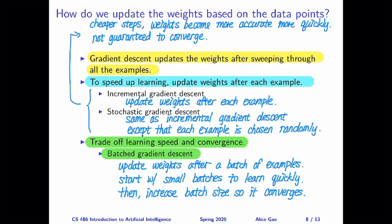That's everything for this video. After watching this video, you should be able to do the following. Explain the high level ideas of gradient descent and how we can apply it to learn the weights in the neural network. Explain how we can use variants of gradient descent to trade off learning speed and convergence to a local minimum. Thank you for watching. I will see you in the next video. Bye for now.